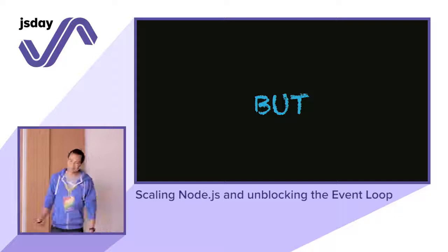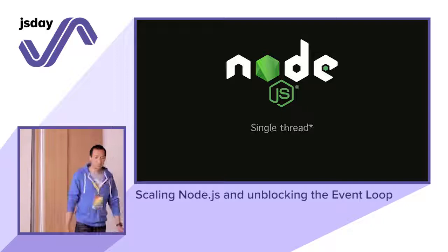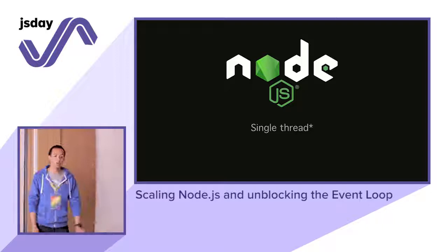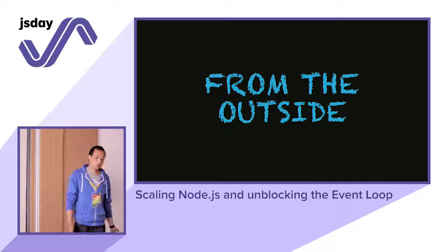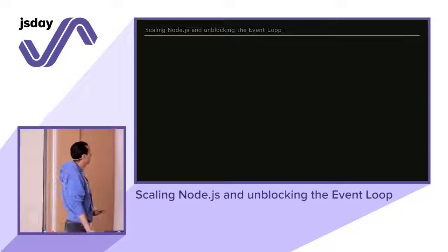But there's always a catch. If you want to work with Node.js at scale in a single process, Node.js — like JavaScript — is single-threaded, so you don't want to block it. How do you scale it? There are many ways.